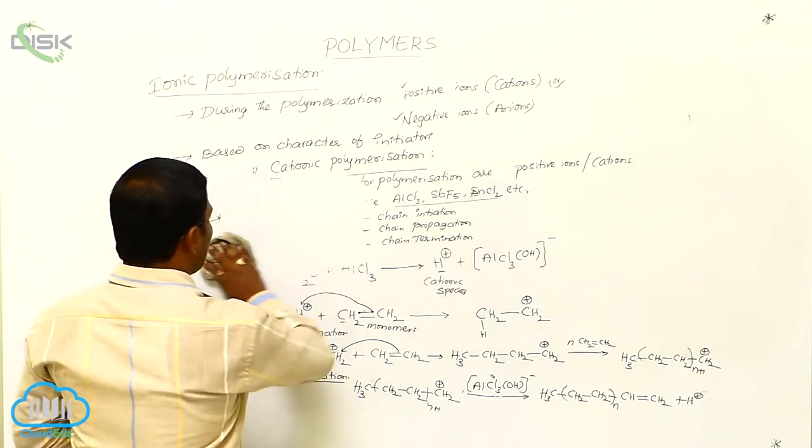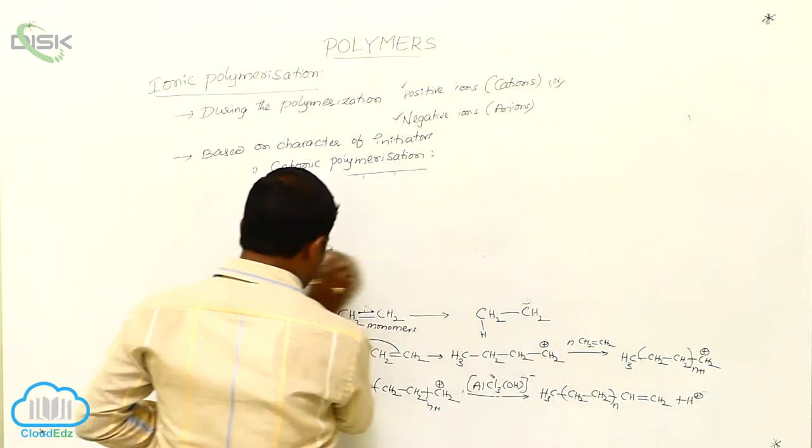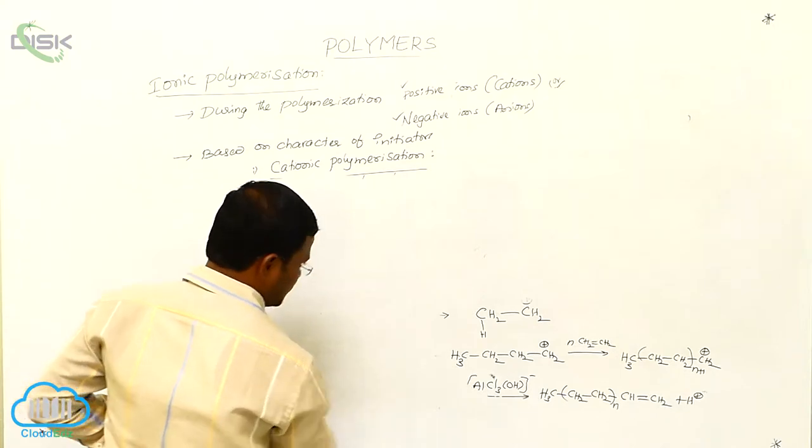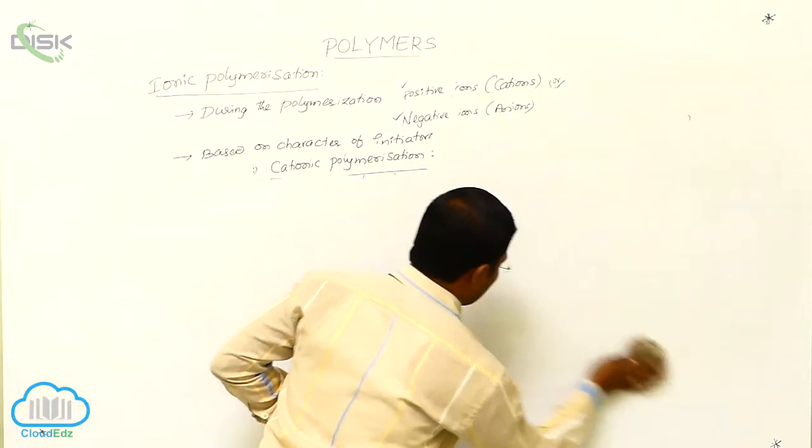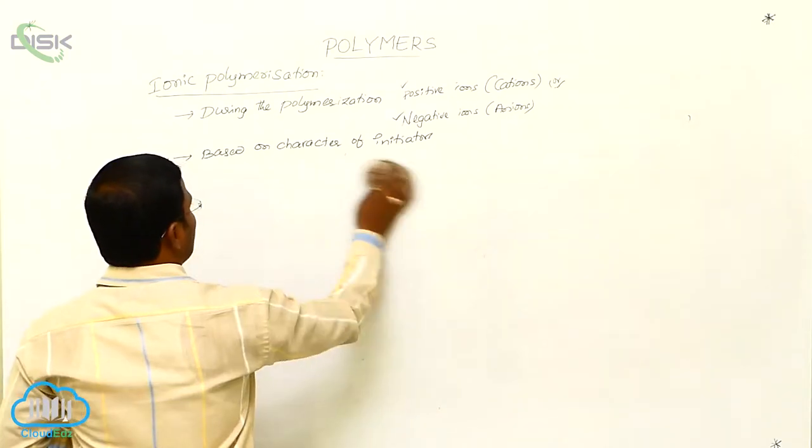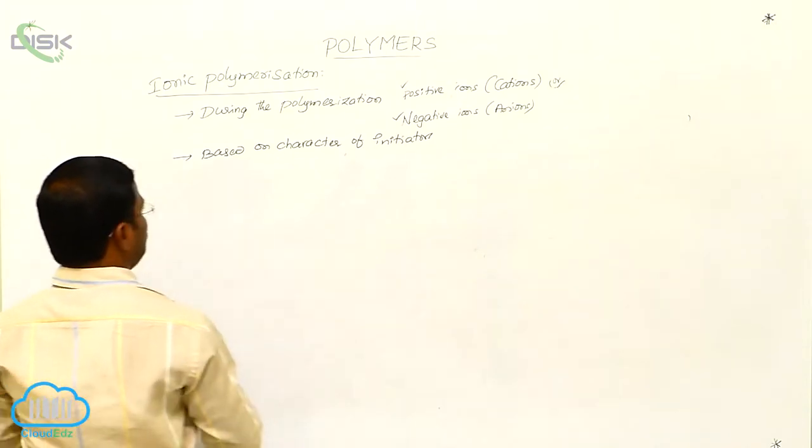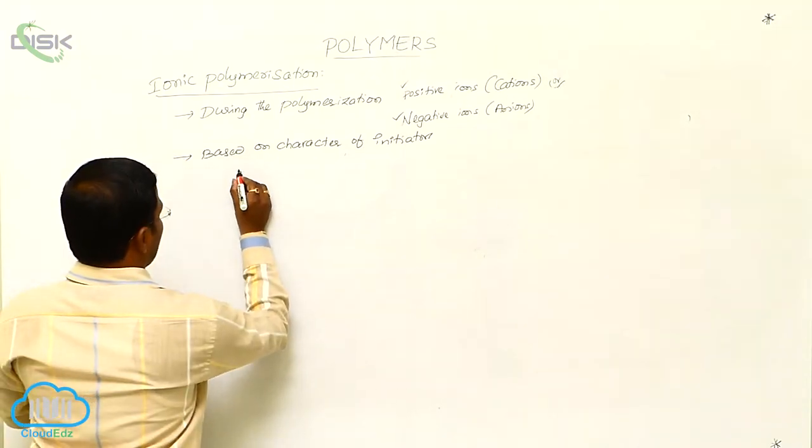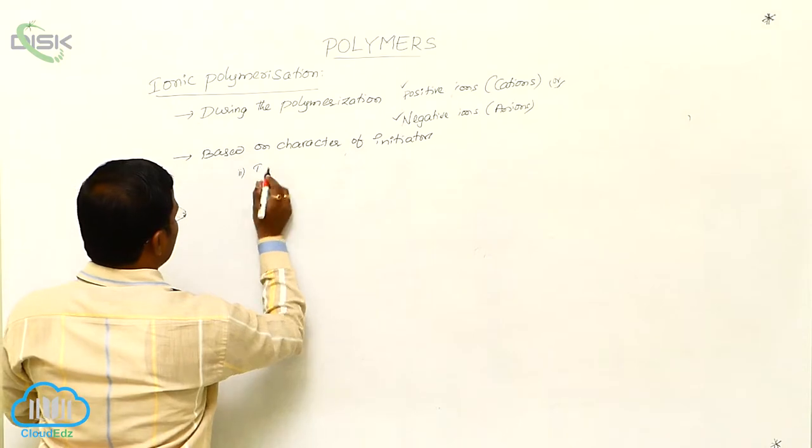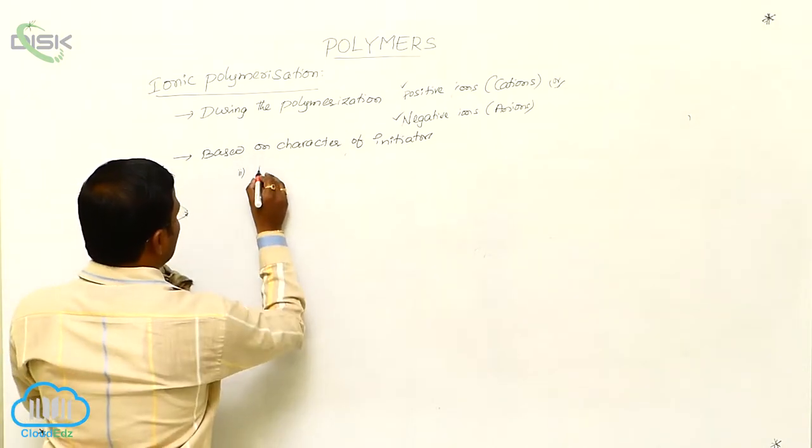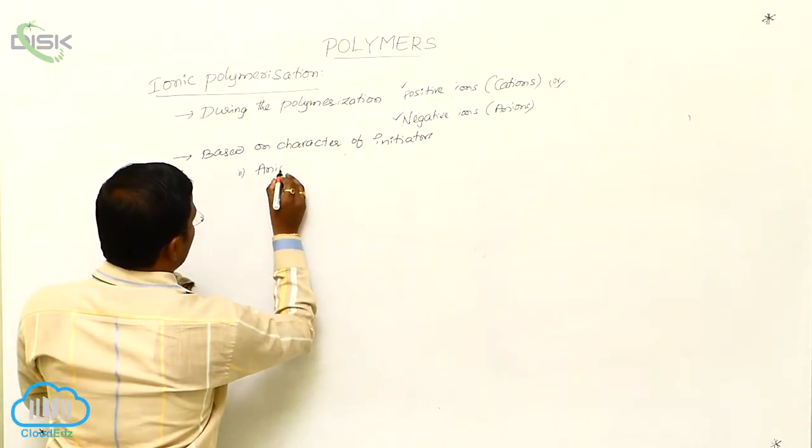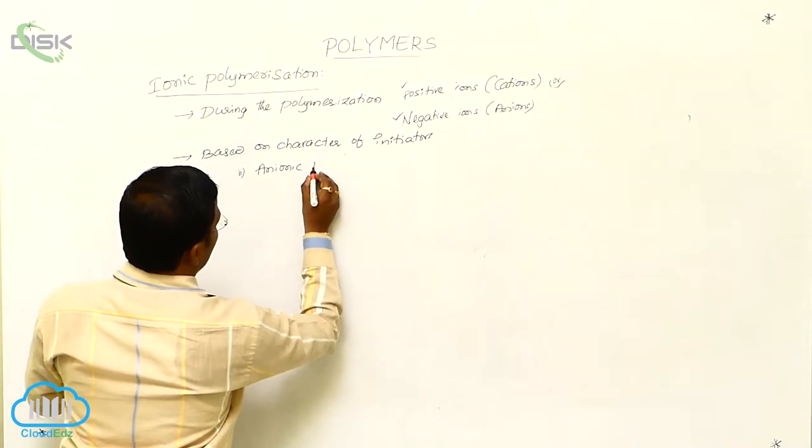And one more type of polymerization from the same chain growth polymerization is anionic polymerization. So let us write what is anionic polymerization. The second type of polymerization is anionic polymerization.